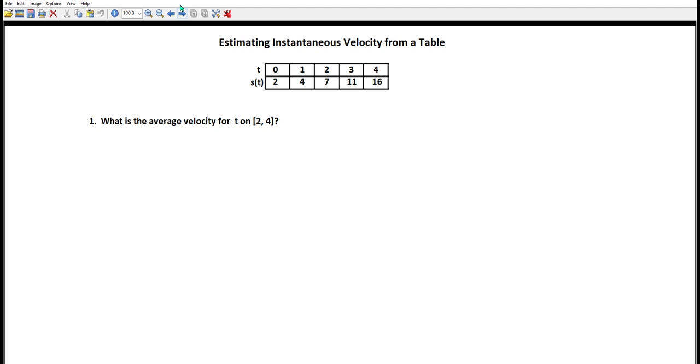So now let's take a look at this velocity thing again. And now let's assume that we don't actually have a function, we just have a table, which tells us the value of s, the position, at various times. And this is all the information we've got. So first question, what is the average velocity for t on the interval [2, 4]? And that's easy.